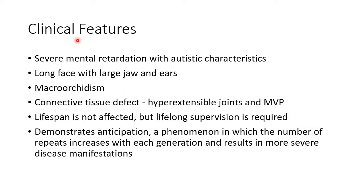The clinical features of Fragile X syndrome include severe mental retardation with autistic characteristics, such as difficulty in social interaction. The patient will have a long face with large jaws and ears, macro-orchidism (large testicles), and connective tissue defects manifesting as hyperextensible joints and mitral valve prolapse.